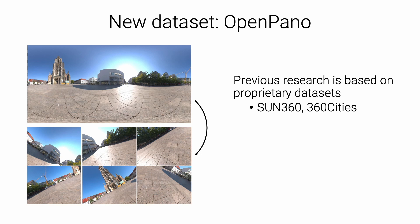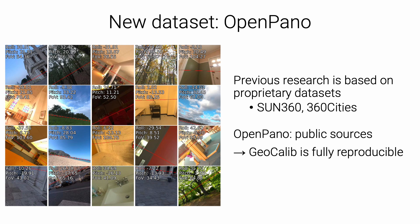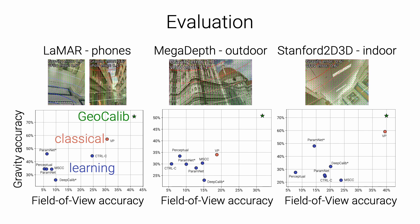Like previous research, we trained GeoCalib on perspective images rendered from panoramas. However, previous research uses datasets that are proprietary and thus not reproducible. We assembled our own training dataset from three public sources such that GeoCalib is fully reproducible. We evaluate GeoCalib on multiple benchmarks that include images taken by various devices in indoor and outdoor scenes. For each benchmark, we plot on the x-axis the accuracy of the field of view at 5 degrees, which is related to the focal length, and on the y-axis the accuracy of the gravity at 5 degrees. Approaches based on deep learning are shown in blue, and the best classical approach is shown in red. GeoCalib consistently outperforms all existing approaches by a large margin in terms of both gravity and field of view.